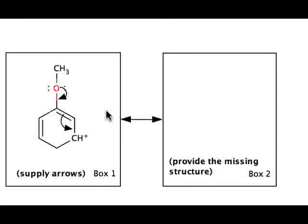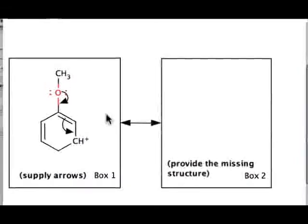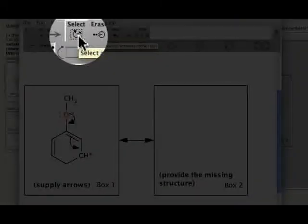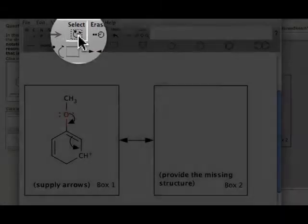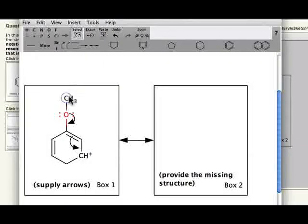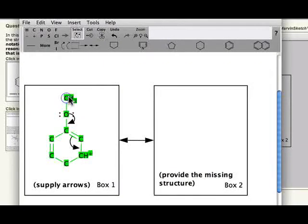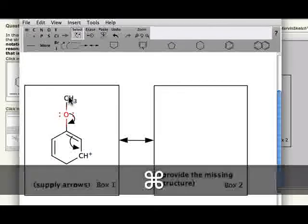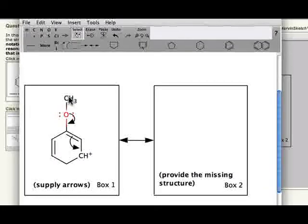Rather than draw the missing structure in box 2, there's a much easier way to transfer your resonance contributors from box to box. By using the Select tool, I can double click on any atom in my structure, automatically highlighting my entire structure without highlighting my electron flow arrows. I can use my ACE hot keys by using Apple C on a Mac, or Control C on a PC, to copy my structure.